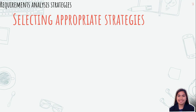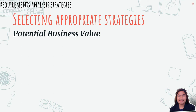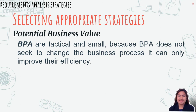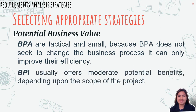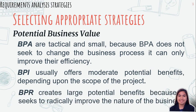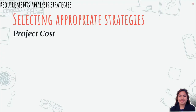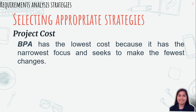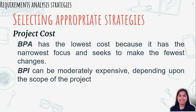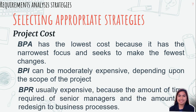There are three techniques in selecting appropriate strategies. First is potential business value, which varies with the analysis strategy. BPA has mostly tactical and small benefits because it does not seek to change the business process — it can only improve efficiency. BPI usually offers moderate potential benefits because it seeks to change the business, increasing both efficiency and effectiveness. BPR creates large potential benefits because it seeks to radically improve the nature of the business. Second is project cost — BPA has the lowest cost because it has the narrowest focus and seeks the fewest changes, while BPI can be moderately expensive.